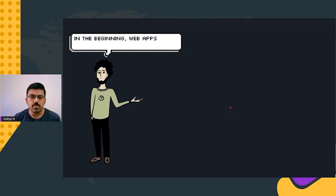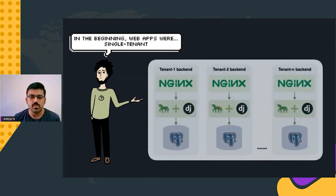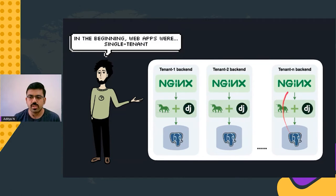In the beginning, web applications were single-tenant. Imagine we've built a wonderful library management system in Django and want to deploy it across multiple customers. The backend deployment architecture for each customer might consist of a load balancer such as Nginx, the primary application server written in Django served by Unicorn, and PostgreSQL being used for the database layer. This entire stack has to be replicated for each customer — this method is called a single-tenant deployment scheme, where the term tenant refers to a customer.